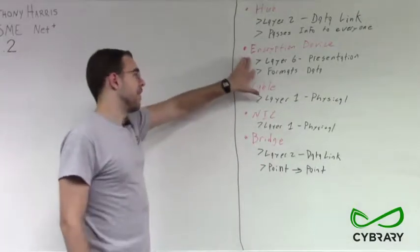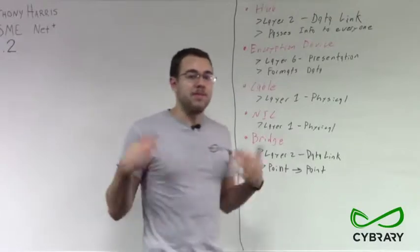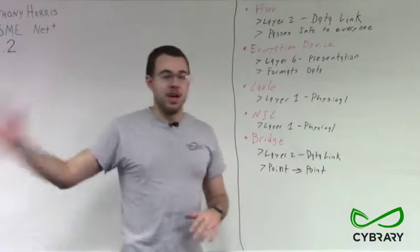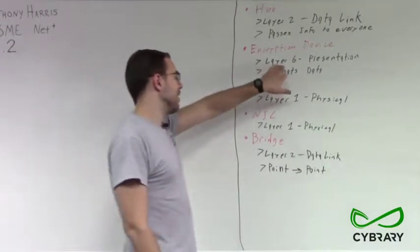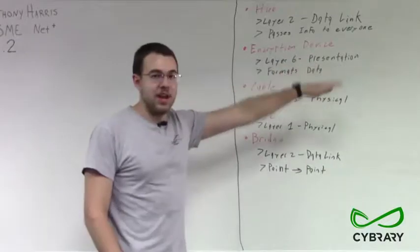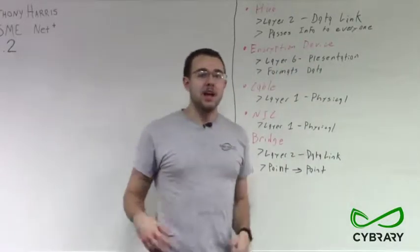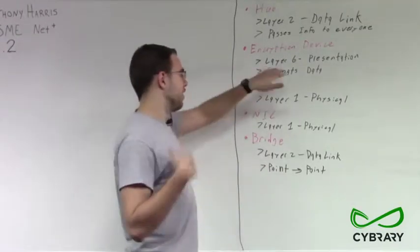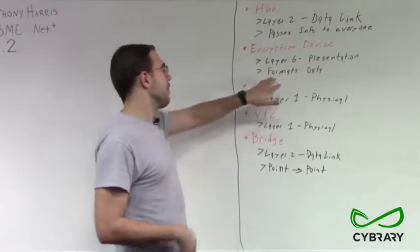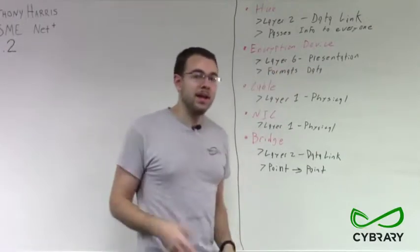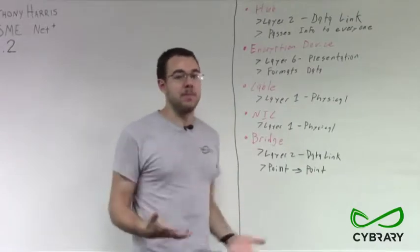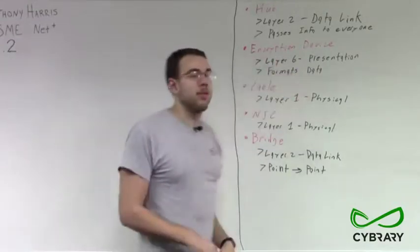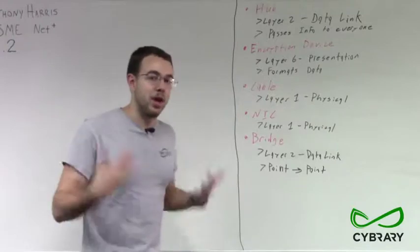We're also going to have encryption devices. These may be physical devices on our network that perform encryption at one point and decryption at another point. These encryption devices are going to be layer 6 devices — layer 6 being our presentation layer. Layer 6 formats our data and does encryption and decryption among other forms of data formatting. Because encryption is a type of data format — a way we're modifying our data so it can be encrypted and transferred over the network — our encryption devices fall under layer 6, our presentation layer.